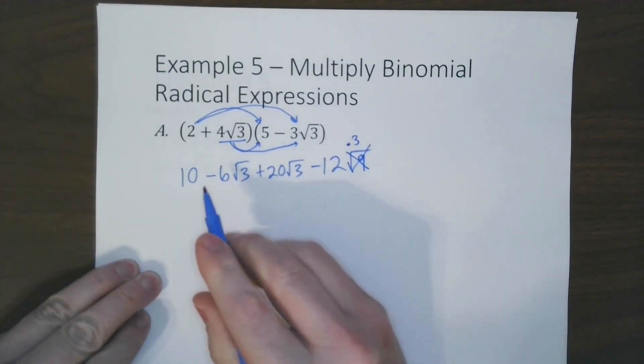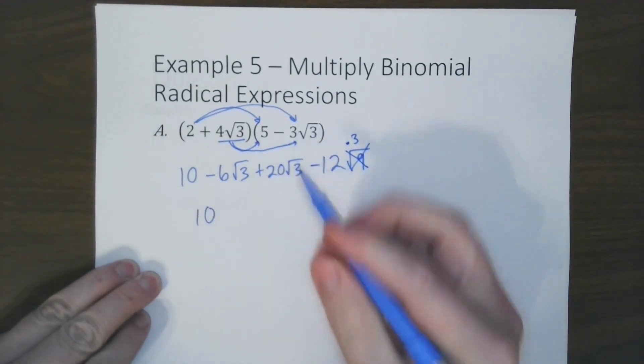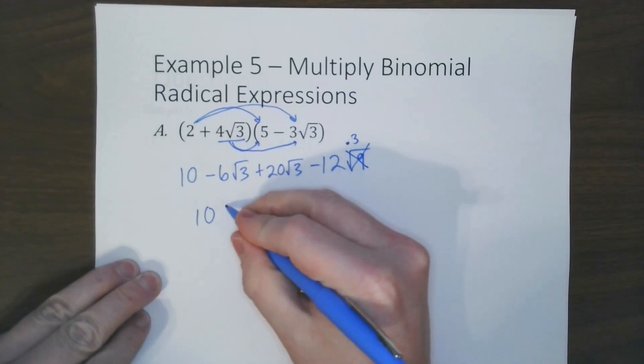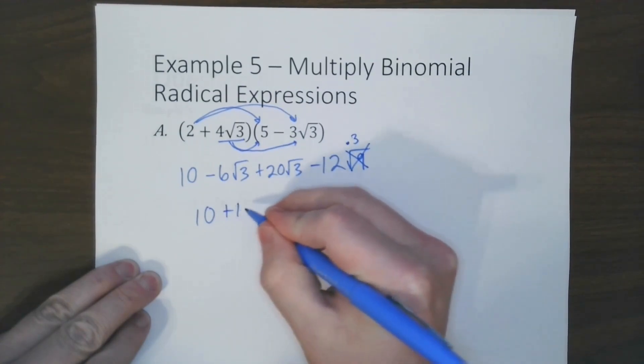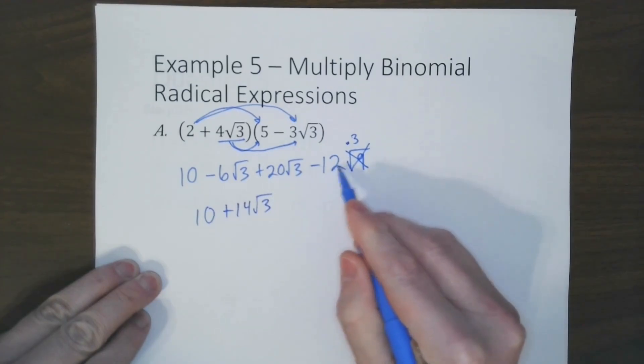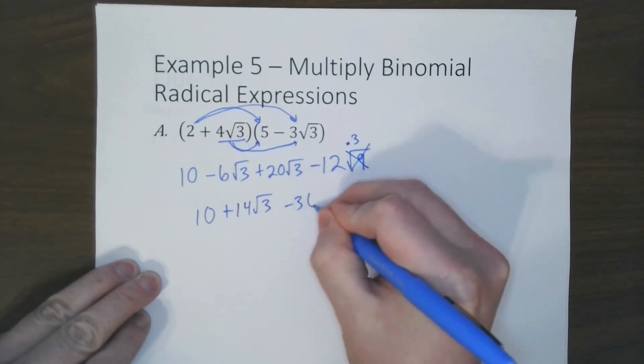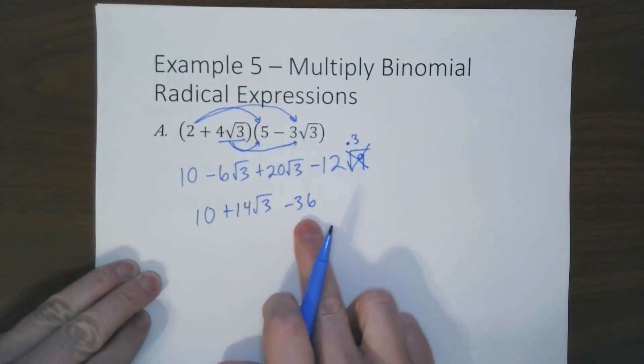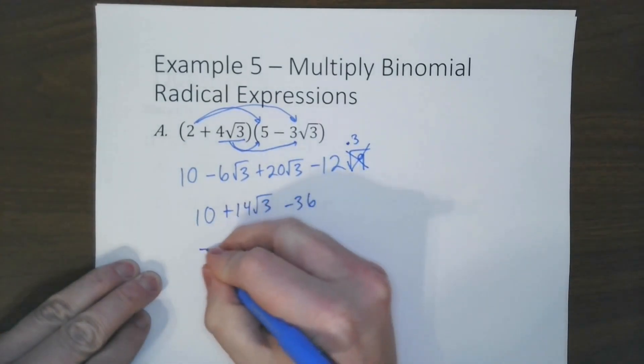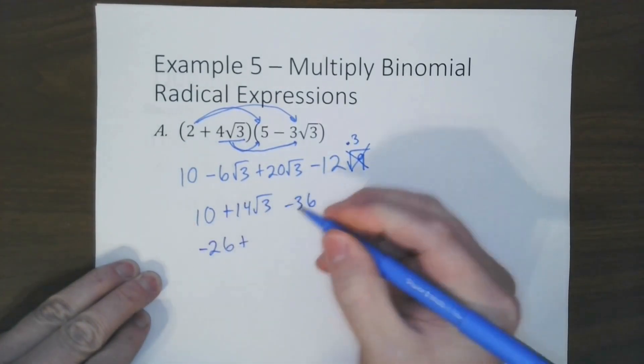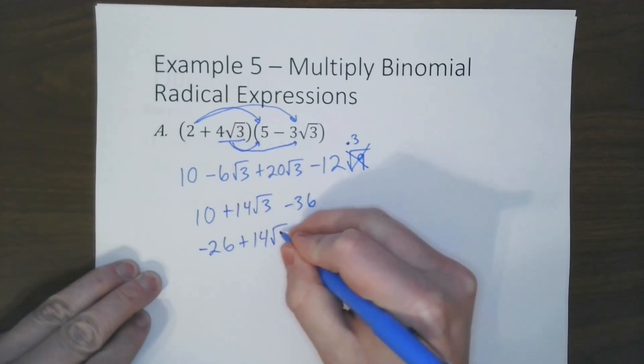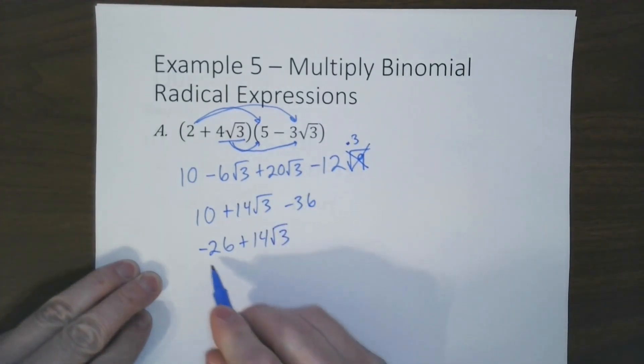And now we're going to go ahead and clean this up. So 10, we're going to combine these. So plus 14 radical 3. And this will be negative 12 times 3, which is negative 36. And now we're going to go ahead and combine these two. So we get negative 26 plus 14 radical 3.